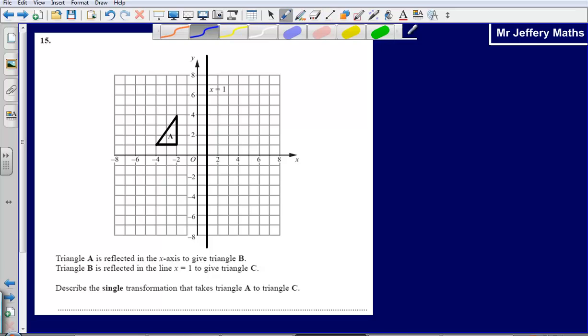This is question 15 from the 2008 calculated paper. Here we're told that triangle A is reflected in the x-axis to give triangle B.